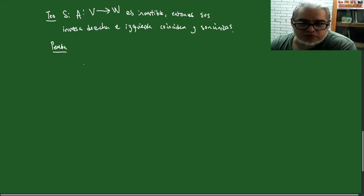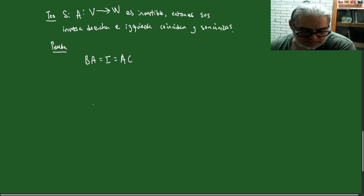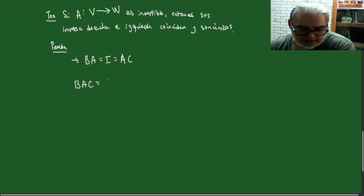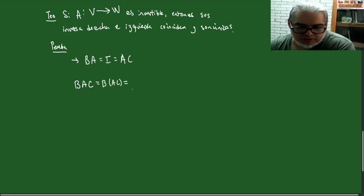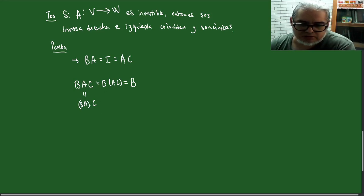Tenemos la inversa izquierda y la inversa derecha. Vamos a considerar B por A por C. Esto es igual —asociando el producto— a B por (A por C), que es igual a B por la identidad, que es B. Pero también esto es (B por A) por C, y el producto asocia, y esto es la identidad por C, que es C. Entonces no queda de otra que B sea igual a C.